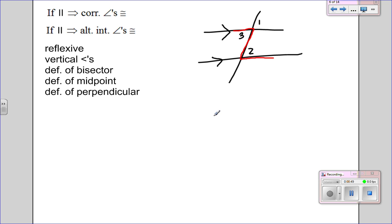Reflexive is if something reflects on itself. Vertical angles would be 3 and 1. Those would be congruent. Bisector is something that cuts either an angle or a segment in half. Midpoint cuts a segment in half. And perpendicular makes right angles.